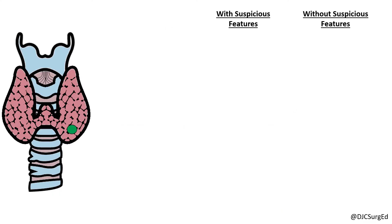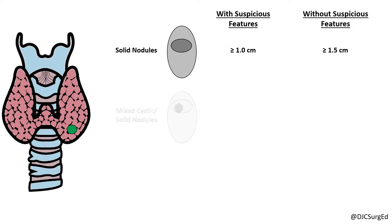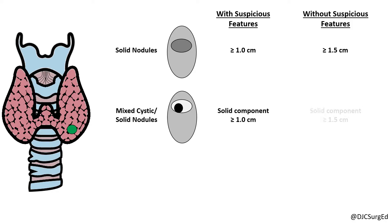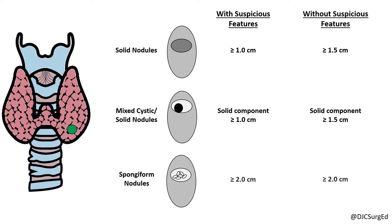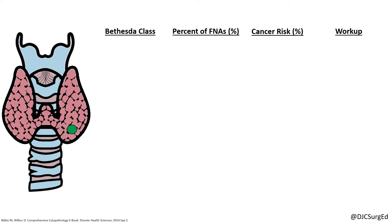FNA should be performed on solid nodules with suspicious features of equal or greater than 1 cm, and without suspicious features of equal or greater than 1.5 cm. For mixed solid cystic nodules, the solid component follows the same guidelines.